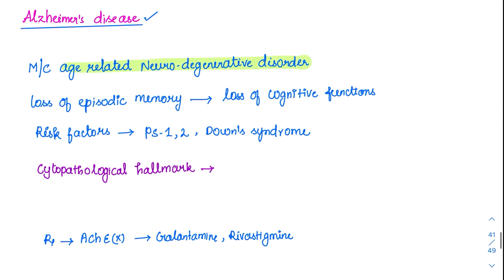What happens in Alzheimer's disease? First, there will be episodic memory loss, followed by loss of cognitive functions. Initially, as people age, they start showing some kind of memory loss — episodic memory will be lost and they will not be able to recall their past. On a later day, their cognition will be lost too, and they will not be able to do regular day-to-day activities. It is very bad for the person.